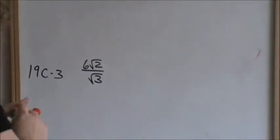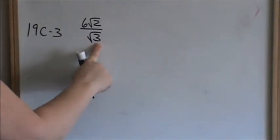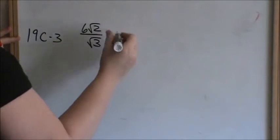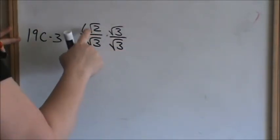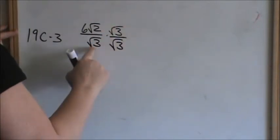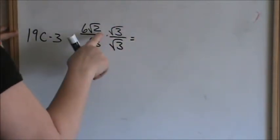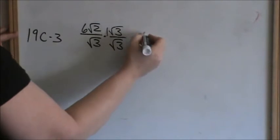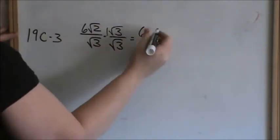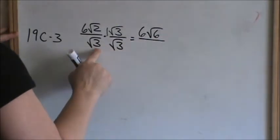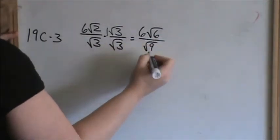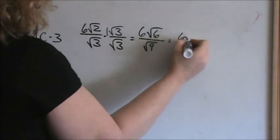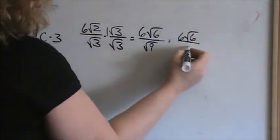Alright, now let's look at 19C3. You have to get rid of the radical in the denominator, so you do that by multiplying it by itself. Whatever you do to the denominator, you have to do to the numerator. Multiplying fractions: you multiply the numerators across and the denominators across. Remember, numbers to numbers, radicals to radicals. The number in front of the square root of 3 is like a 1, so it's like 6 times 1 is 6. Square root of 2 times square root of 3 is square root of 6. Square root of 3 times square root of 3 is square root of 9. Now you simplify radicals: square root of 6 does not simplify any more than that, so we leave 6 square root of 6. Square root of 9 is 3.